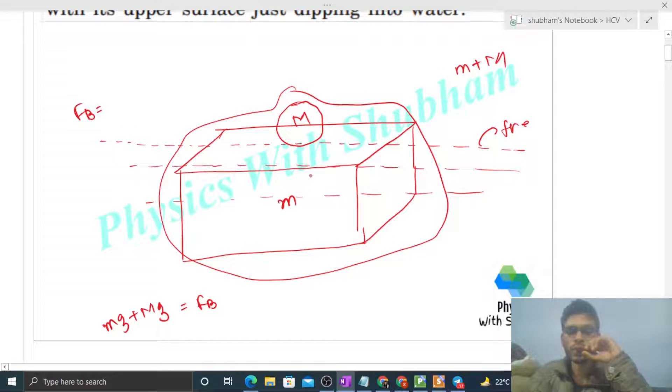Look, the lead has no volume inside the water. The volume of this cube that is inside the water, what will be the volume of the cube? That will be simply mass divided by density of the cube.